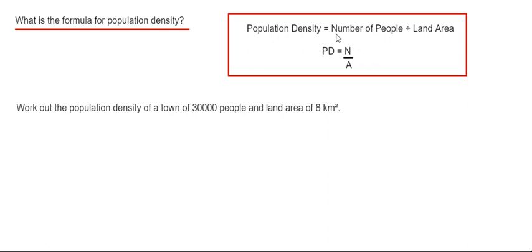Well, the formula is population density equals the number of people divided by the land area. So you can write this in symbol form as PD equals N divided by A.